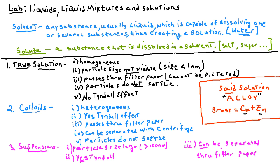In suspensions, particle sizes are greater than 100 nanometers — in some suspensions you can actually see the solute particles. There is a Tyndall effect, and the particles can be separated through filter paper because the particle size is large enough for the filter to stop them. The particles do settle. An example of a suspension is sand shaken up in a jar of water — after a while the sand settles at the bottom.